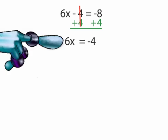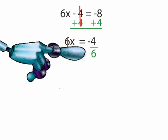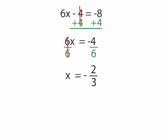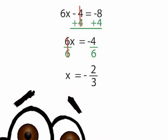To get rid of the 6, we can then divide both sides by 6. The two 6s cancel out on one side. On the other side, we have negative 4 over 6. Negative 4 over 6 can further simplify to negative 2 over 3. We are then left with our answer, x equals negative 2 thirds.